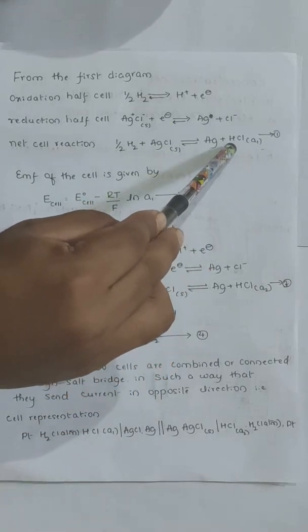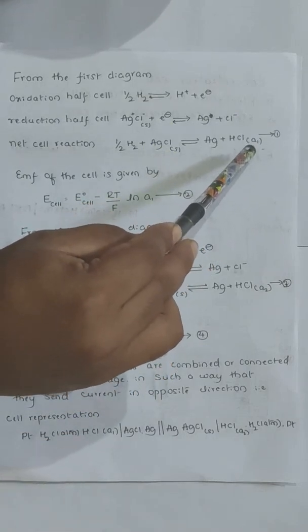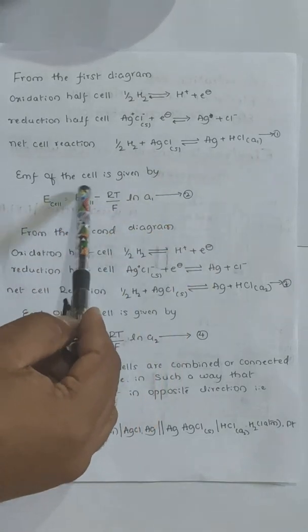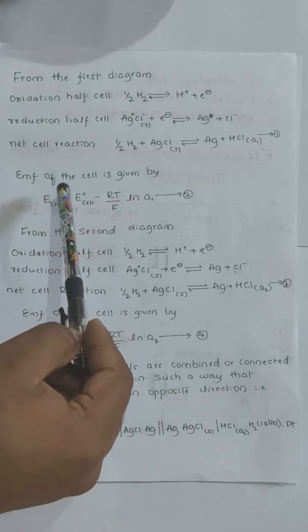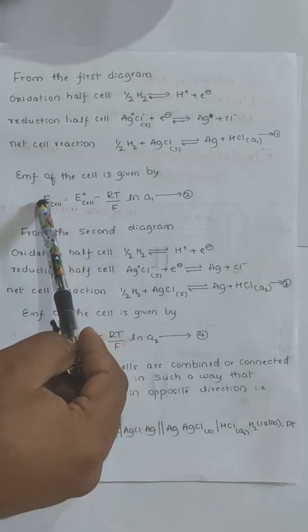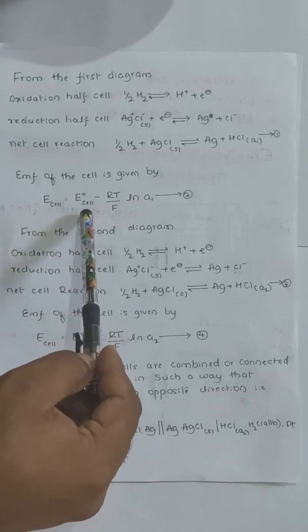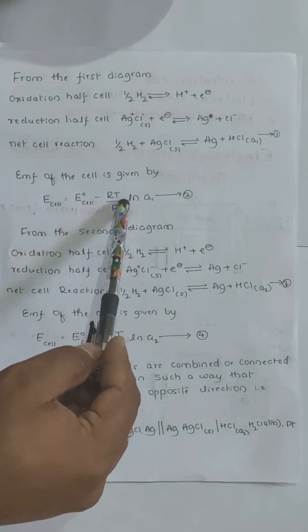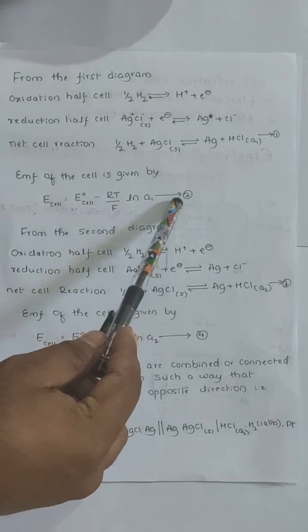The concentration of HCl is A1, or you can say the activity is A1. The EMF of the cell is given by the Nernst equation: EMF of the cell equals E⁰ of the cell minus RT/F times ln(A1). This is equation 2.